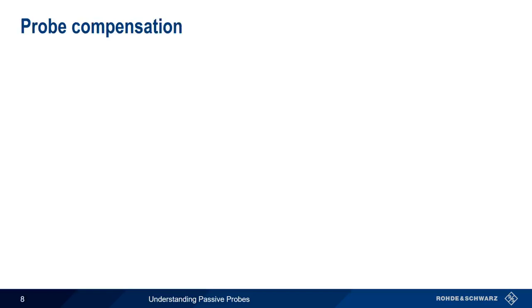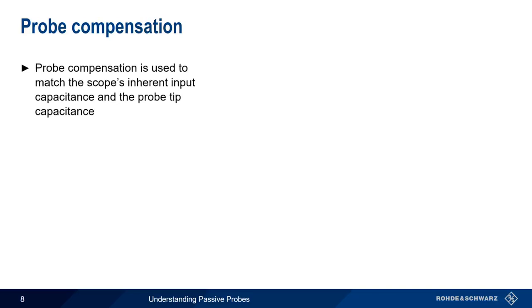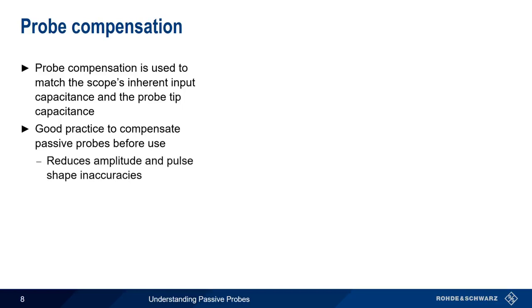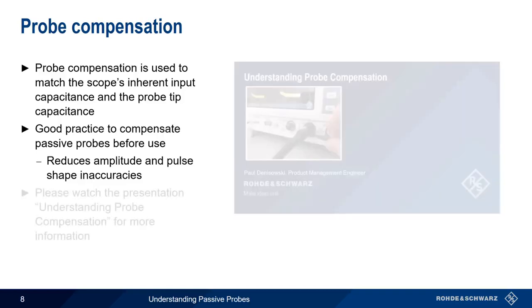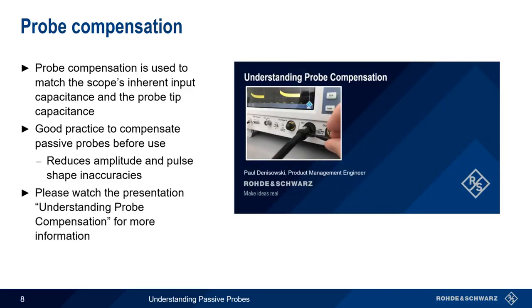Probe compensation is important whenever using probes, and especially in the case of 10x probes. Probe compensation is used to match the scope's inherent input capacitance with the capacitance in the probe tip. It's a good idea to compensate passive probes before use, since this will reduce amplitude and pulse shape inaccuracies in the measured signal. To learn more about probe compensation and why it's important, please watch the separate presentation understanding probe compensation.